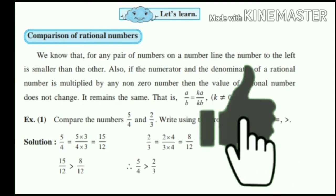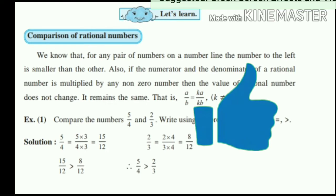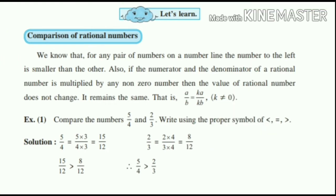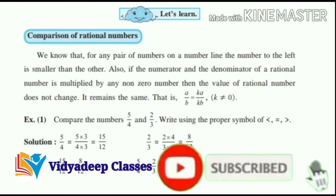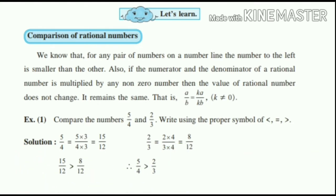Also, if the numerator and denominator of a rational number is multiplied by any non-zero number, non-zero number means it should not be 0, then value of rational number does not change. It remains the same.